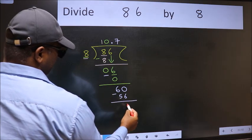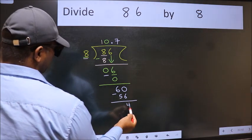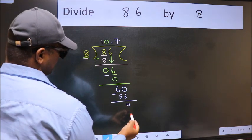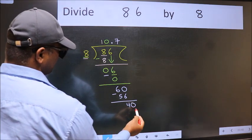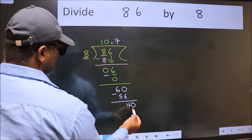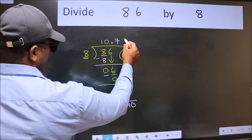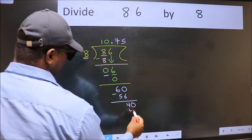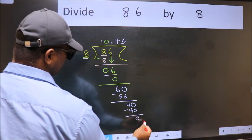Now we subtract. We get 4. 4 smaller than 8. We already have the decimal. So directly take 0. So 40. When do we get 40 in 8 table? 8 5s, 40. Now we subtract. We get 0.